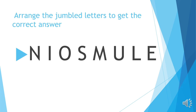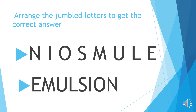Next, letters N, I, O, S, M, U, L, E. What word can you form using those letters? Yes, you're right! The word is emulsion. Spell emulsion: E-M-U-L-S-I-O-N.